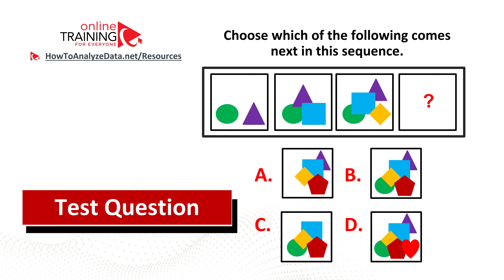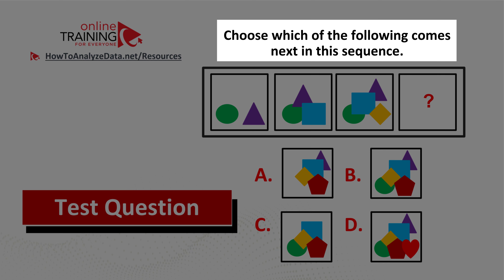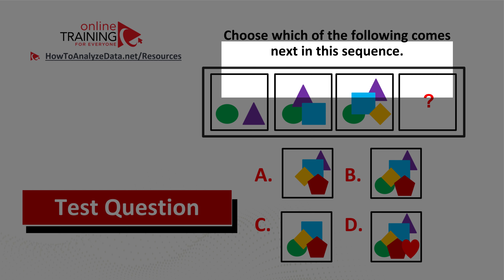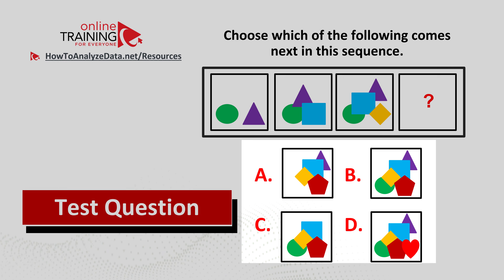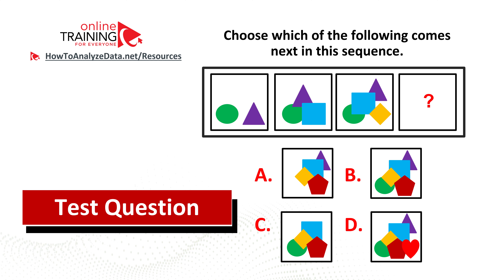Here's an interesting question from the real test. Choose which of the following comes next in the sequence. You're presented with a sequence of objects — take a close look and try to determine which one of the choices A, B, C, or D comes next. Now might be a good time to pause this video to see if you can come up with the solution on your own.